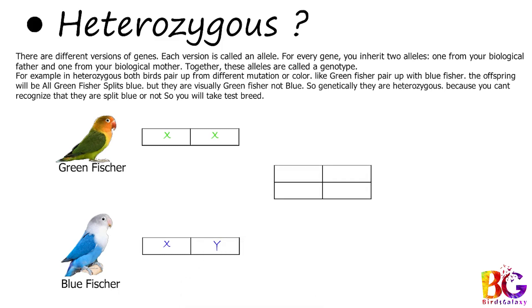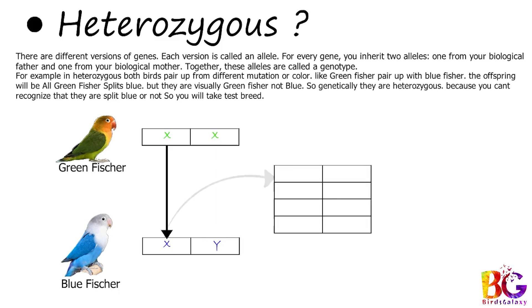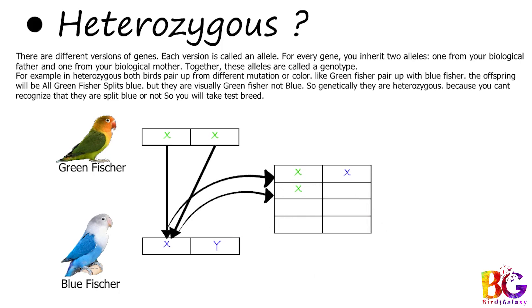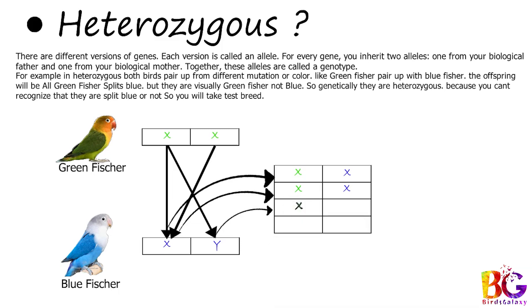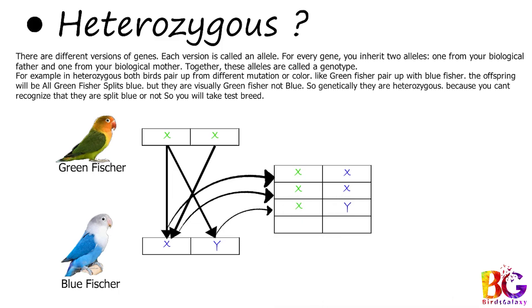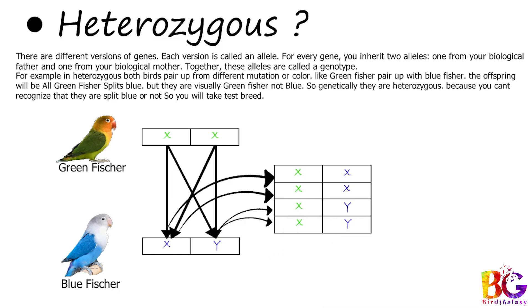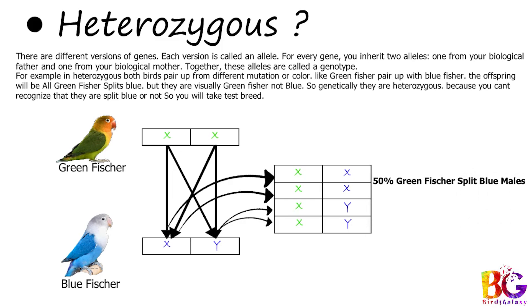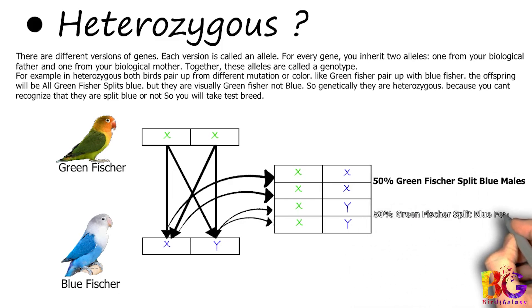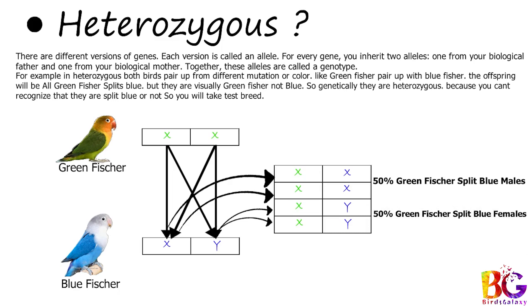For example, we pair greenfisher with bluefisher. Now cross each male chromosome with female chromosome, the same as in the Punnett table. These offspring will look like greenfisher but actually they are greenfisher splits blue. So in the results, all offspring are visual greenfisher but they are actually splits blue as well — so we call them heterozygous.